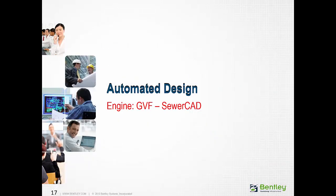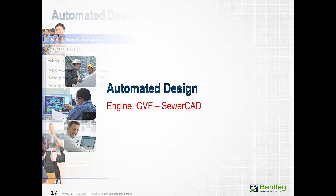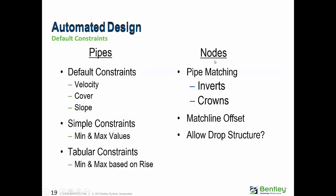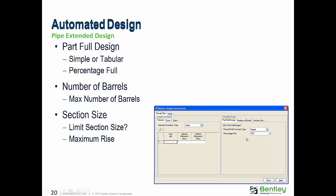The GVF Convex Engine in SewerCAD is used to automatically design the sanitary sewerage network. A tool called Default Design Constraints allows the modeler to define velocity, cover, and slope constraints. For nodes, you can constrain pipe matching by inverts or crowns and specify whether to include drop structures in the design. You can also do part-full design, specifying the network for 80% or 70% full. You can specify the number of barrels in conduits and limit section size.